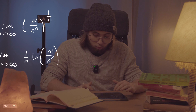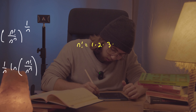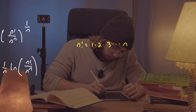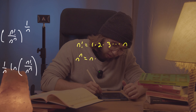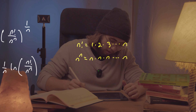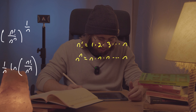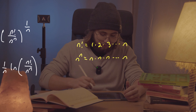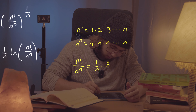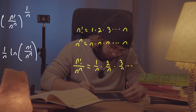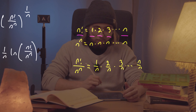We know n factorial equals 1 times 2 times 3 all the way up to n. On the other hand, n to the power of n is n multiplied by itself n times. So I can write n factorial over n to the n as just (1/n) times (2/n) times (3/n) up to (n/n) — grouping the products into pairs and dividing.